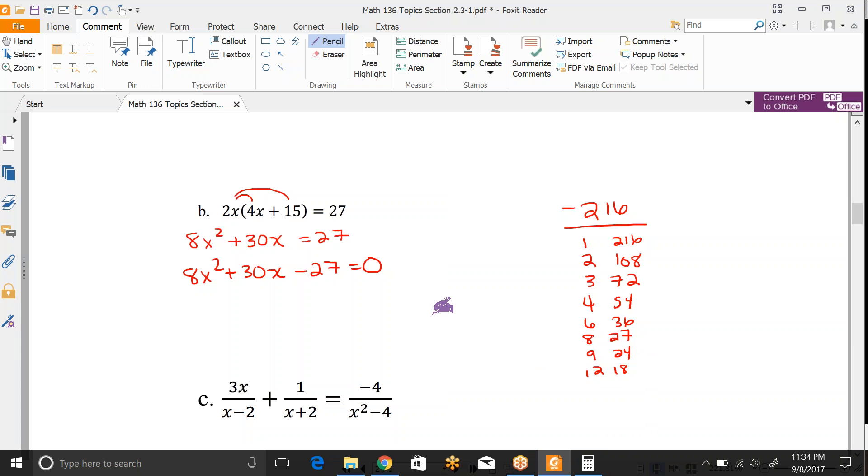We're looking for factors that multiply to negative 216 but add to positive 30. So if you multiply to a negative, you have to be different signs. The only way we're going to make 30 is using the 6 and the 36. We'd want the 6 to be negative and the 36 to be positive to get a positive 30. So remember our next step is to write this with the middle expanded. 8x² + 36x - 6x - 27 = 0. We would pull out a GCF out of each group. We can pull out 4x out of the first pair, which gives 2x + 9. Pull out a negative 3 out of the second pair, which also leaves 2x + 9. Our parentheses match. So we get (2x + 9)(4x - 3) = 0.